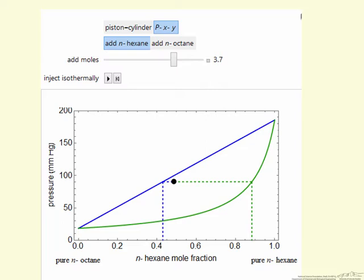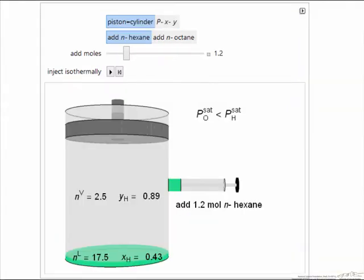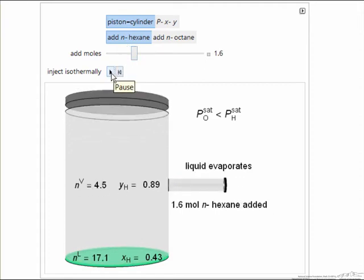So let's go and look at the actual interactive simulation. Here's the interactive simulation where we can select how many moles we're going to add to the system, and then we click play. The system's going to go to equilibrium. In this case a significant amount of liquid evaporates.